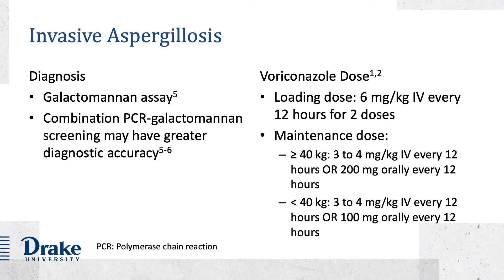A diagnosis of aspergillosis is treated with voriconazole, and it requires a loading dose of 6 mg per kg by intravenous route every 12 hours for 2 doses. Following that, maintenance dosing is started and is typically weight-based, as listed here. This is the same dosing that is used for candidemia and invasive candidiasis. Duration of treatment should be at least 14 days, but is typically much longer in practice, even months.